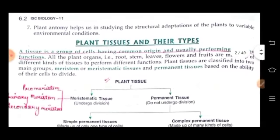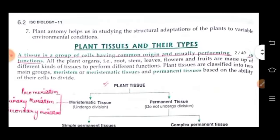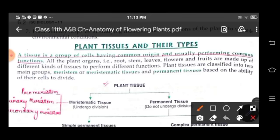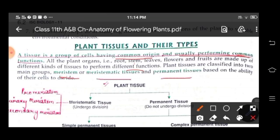Let's come to plant tissues and their types. Children, you have already studied about tissues in class 9. A tissue is a group of cells having a common origin and usually performing common functions. All plant parts like stem, leaves, flower, root and fruits are made up of different kinds of tissues performing different functions. Plant tissue is divided into two main groups: meristematic tissue and permanent tissues.